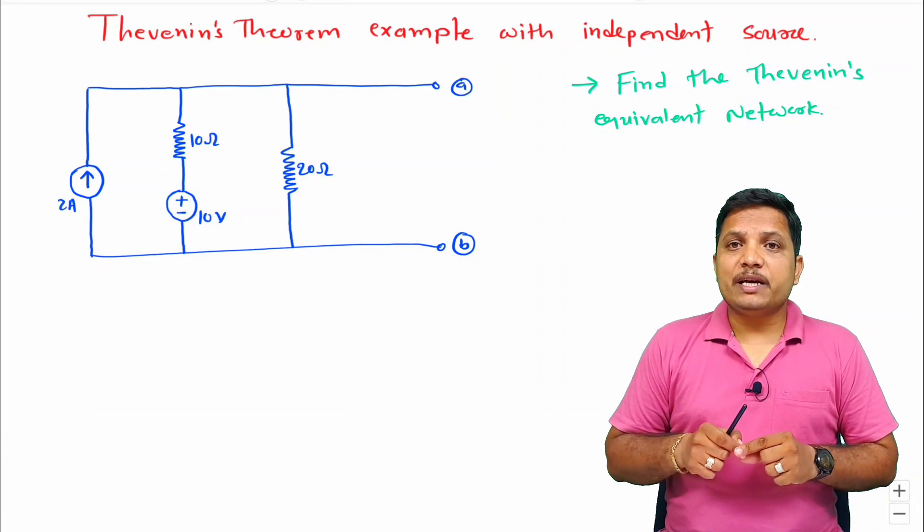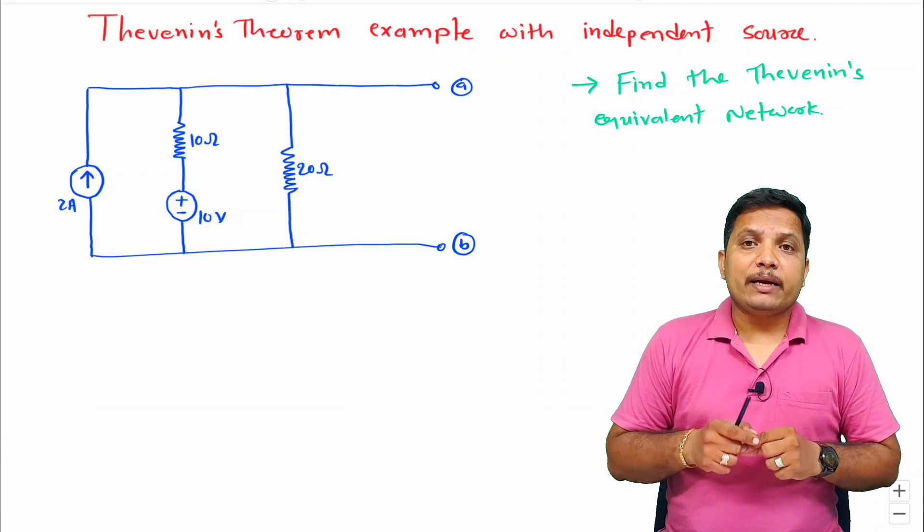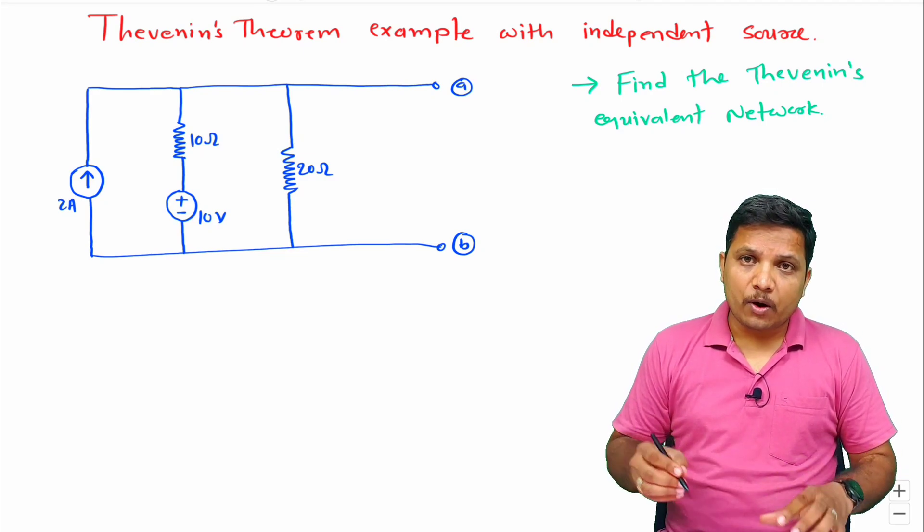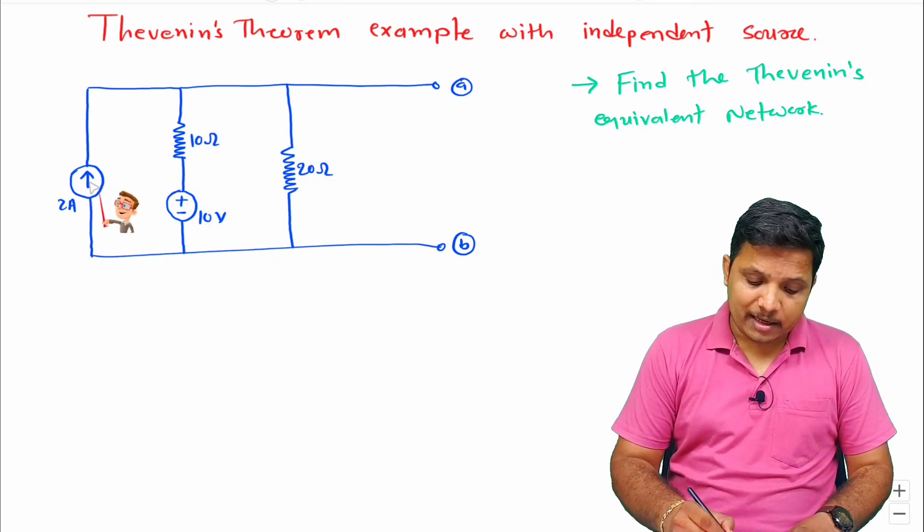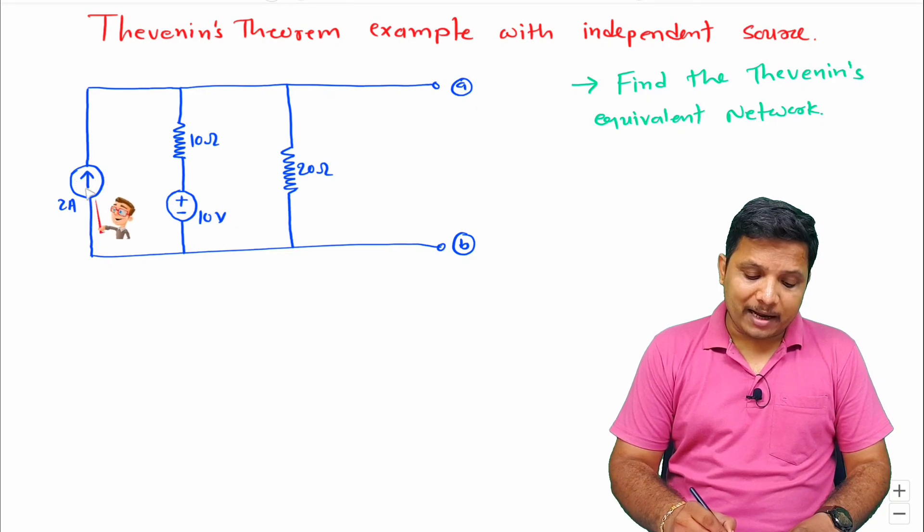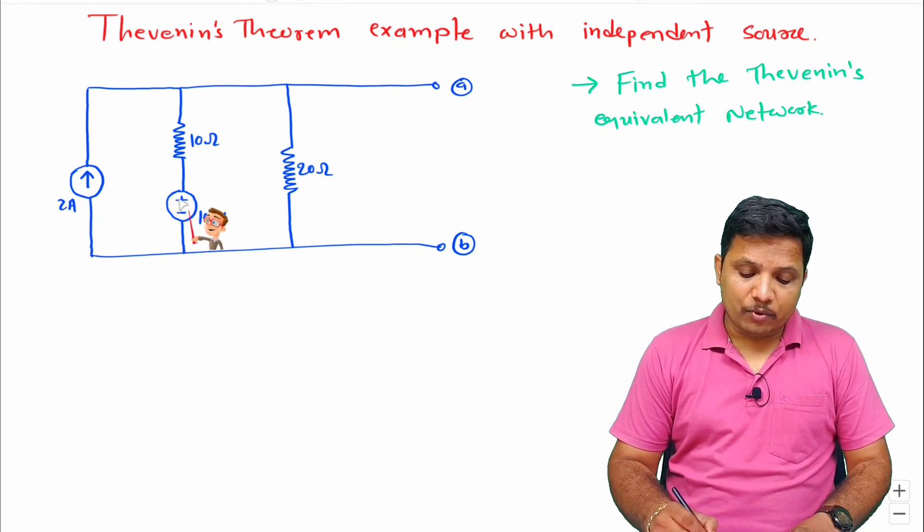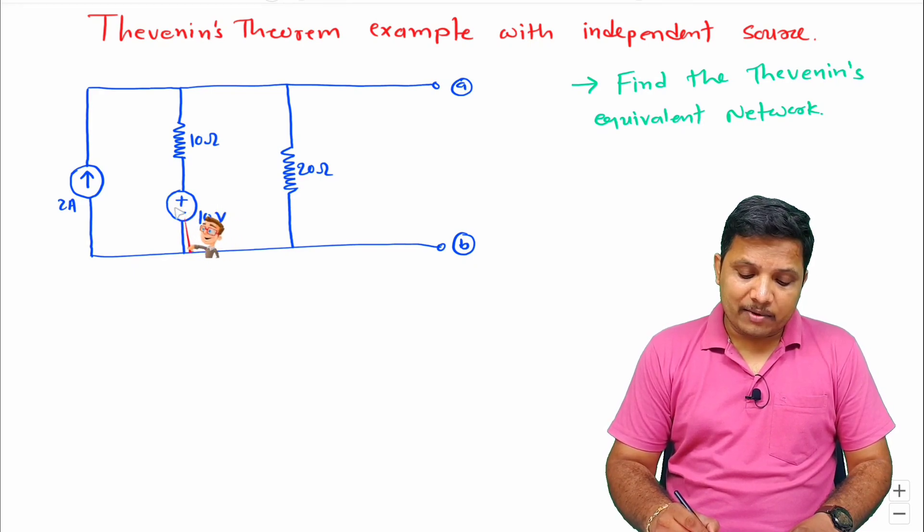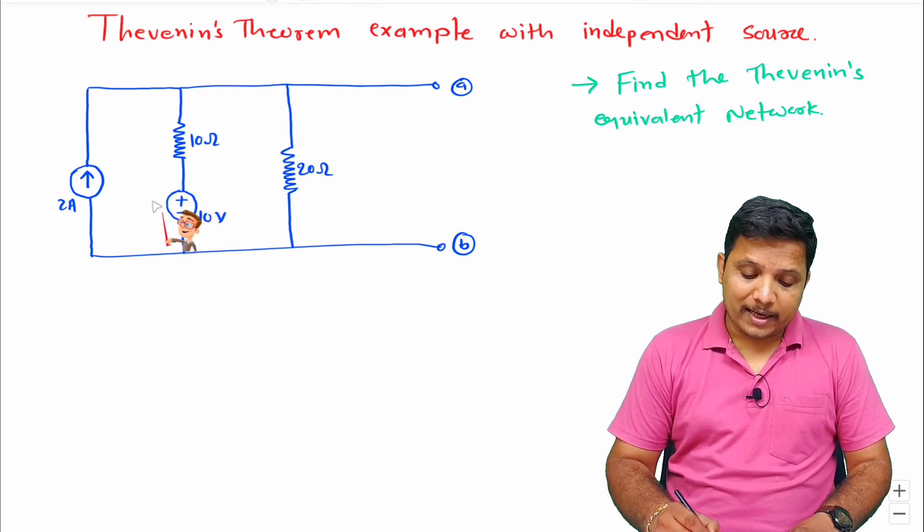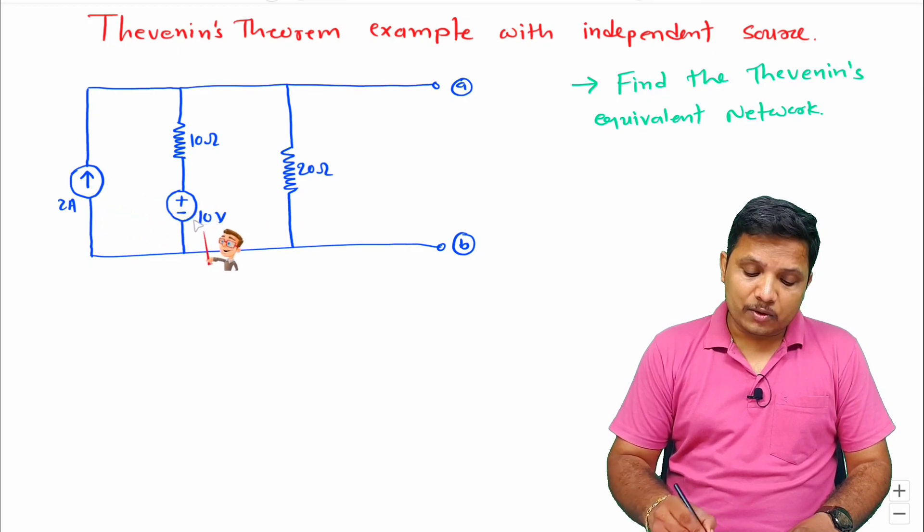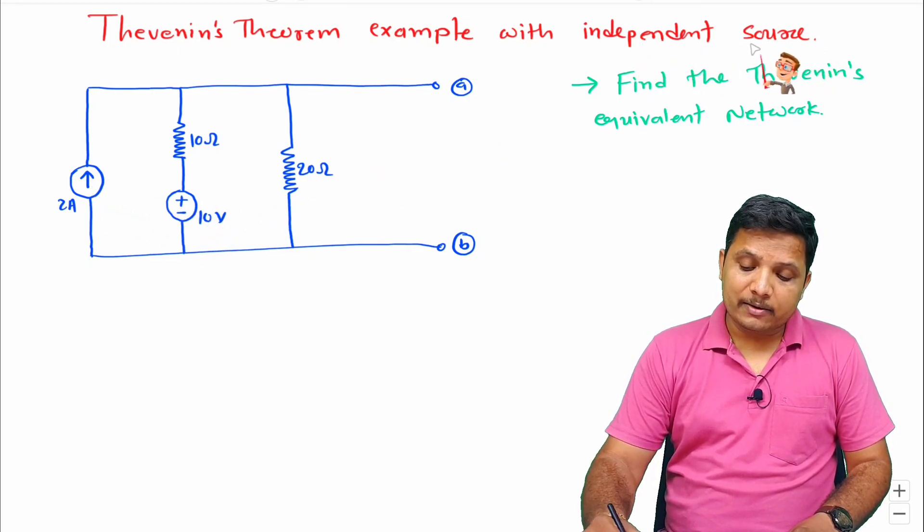Here this problem is based on independent sources. If you observe the circuit, we have a 2 ampere current source which is constant and we have a 10 voltage battery which is also constant. So I can say these sources are independent sources.